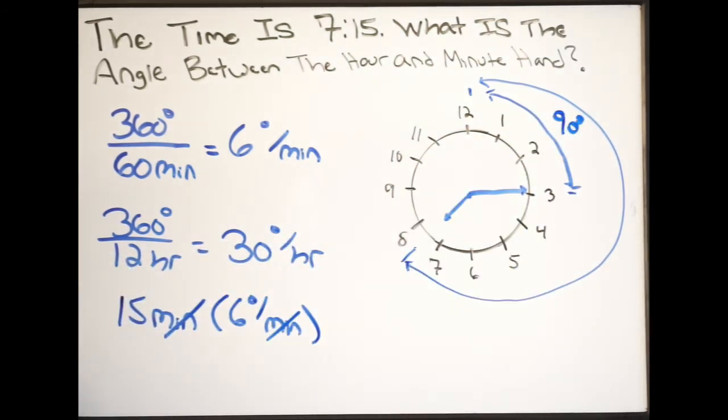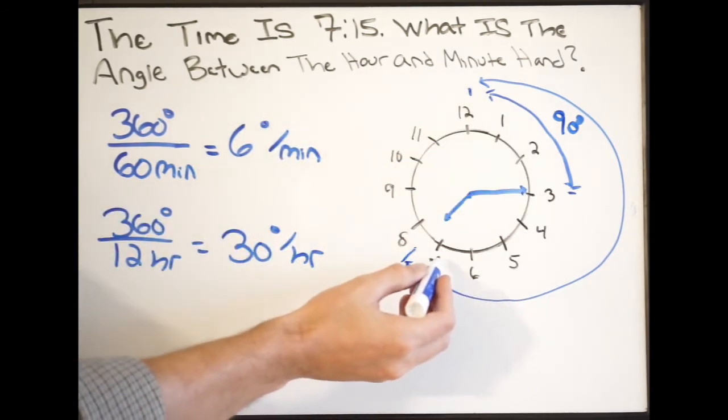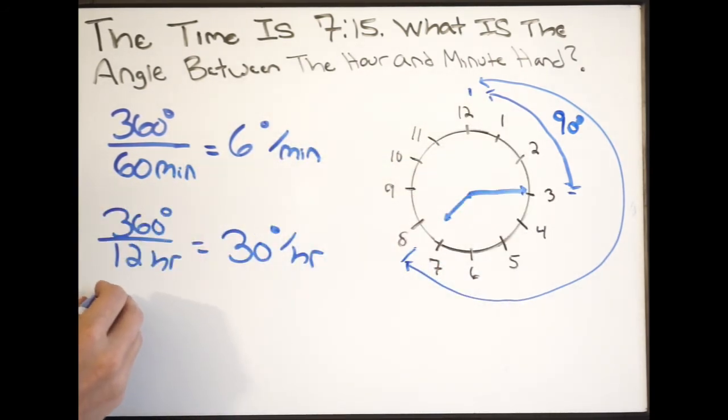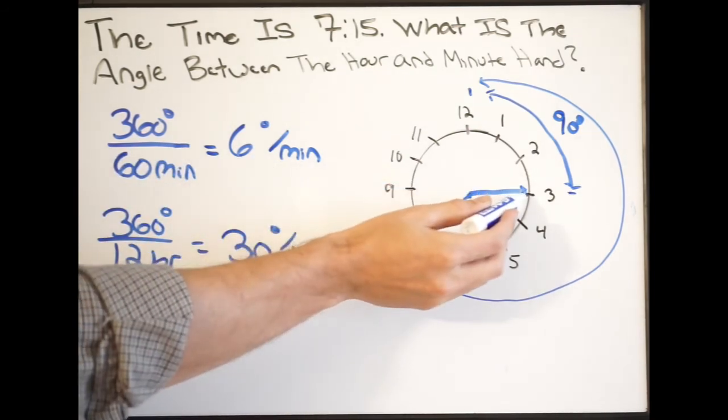And now we're going to do the same thing here with the hours. So let's go ahead and erase this. Same thing, I'm going to count my hours here. So I'm going all the way to 7. So I'm going to do 7 hours times 30 degrees per hour. Now, just be careful here that you're not done. Because look at my minute hand. It's on to 3. So 15 minutes have gone by here.